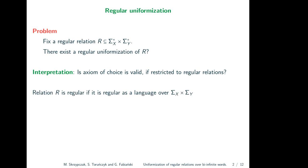I assume everybody knows what regular languages are, but there is no common definition of regular relation. I choose a regular language over a product alphabet Σ_x × Σ_y. Any regular language of this form can be seen as a relation between words over Σ_x and words over Σ_y, since each word over the product alphabet corresponds to a pair of words. The relations obtained this way are called regular relations. Note that whenever two words are related by a regular relation, they must have the same length.